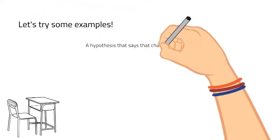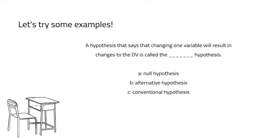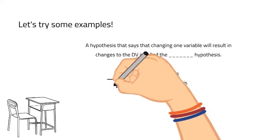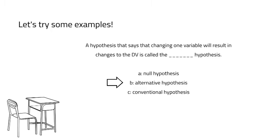Let's try some examples. A hypothesis that says that changing one variable will result in changes to the dependent variable is called the blank hypothesis. Your choices are the null, the alternative, or the conventional hypothesis. We know it's not the conventional hypothesis because that's not one of the hypotheses we covered. The correct answer is B, the alternative hypothesis, which states there will be some kind of difference or relationship in your variables.